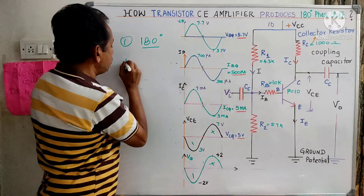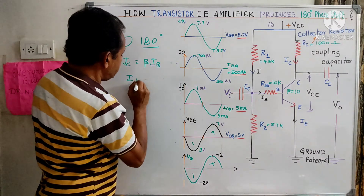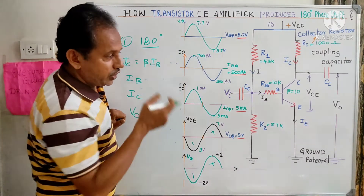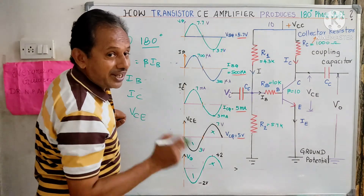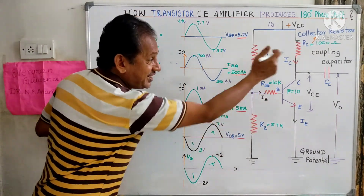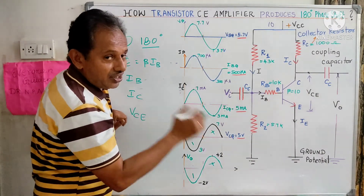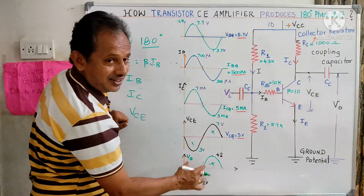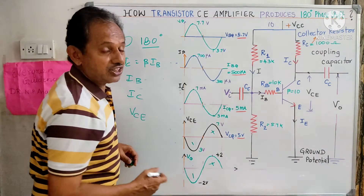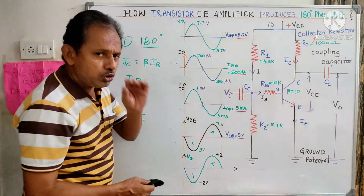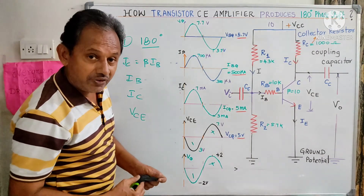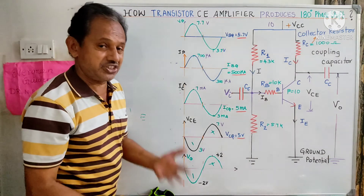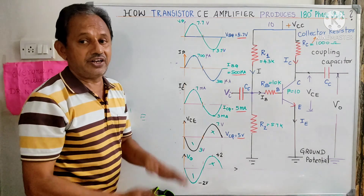To summarize: current gain equals beta × IB. The input and output current equations, and VCE — these parameters you must be familiar with to solve MCQs. The biasing resistances are selected so that the amplifier amplifies voltage as well. If you have the concept and numerical values, you can solve problems. Subscribe and share — thank you.